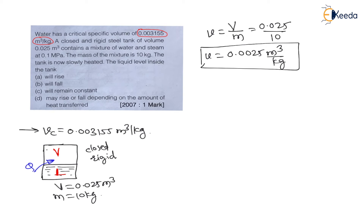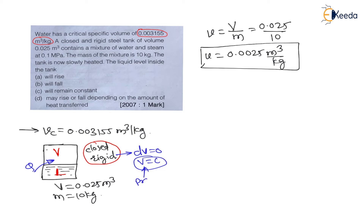It is mentioned that the tank is closed and rigid. Rigid means there is no change in dimension, therefore no change in volume. The volume of the tank remains constant, meaning this is a constant volume process.